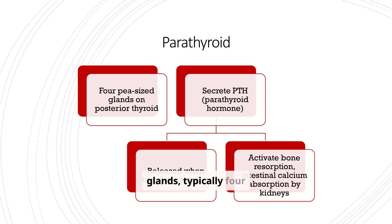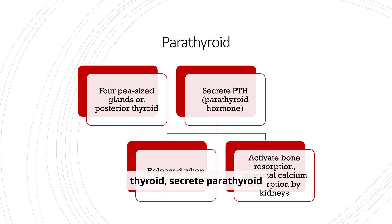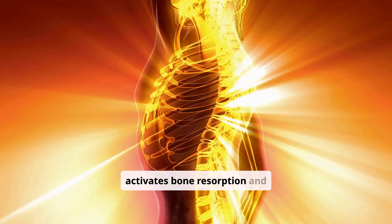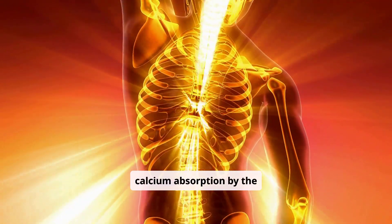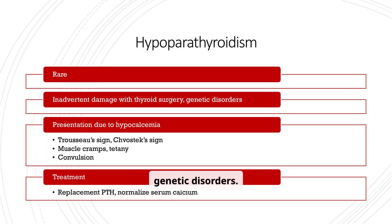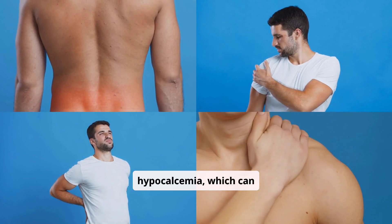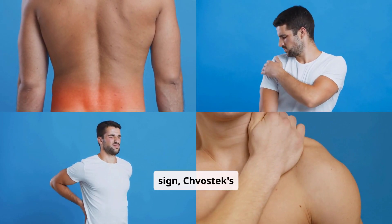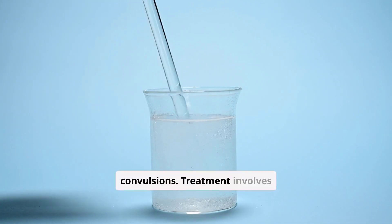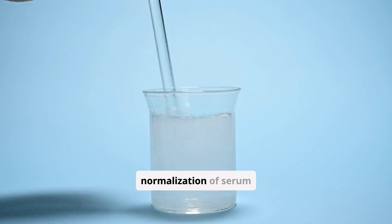The parathyroid glands, typically four pea-sized glands located on the posterior thyroid, secrete parathyroid hormone (PTH). PTH is released when blood calcium levels are low, activating bone resorption and increasing intestinal calcium absorption by the kidneys. Hypoparathyroidism is a rare condition often caused by inadvertent damage during thyroid surgery or genetic disorders. It leads to hypocalcemia, which can manifest as Trousseau sign, Chvostek sign, muscle cramps, tetany, and convulsions. Treatment involves PTH replacement and normalization of serum calcium.